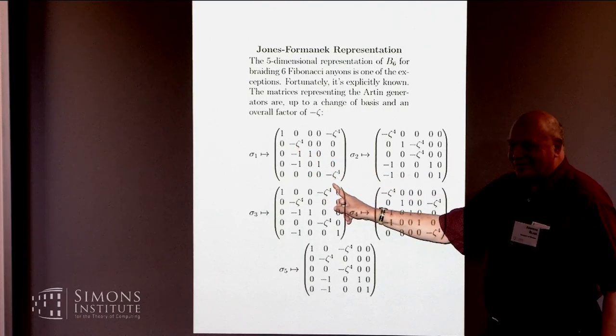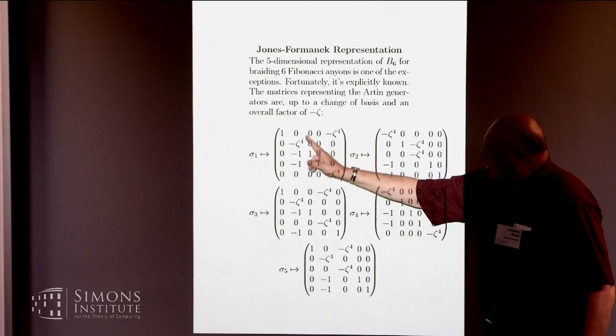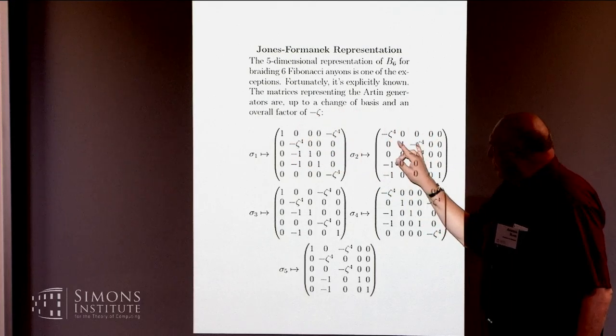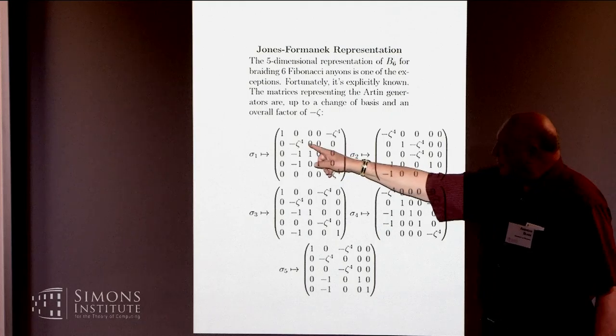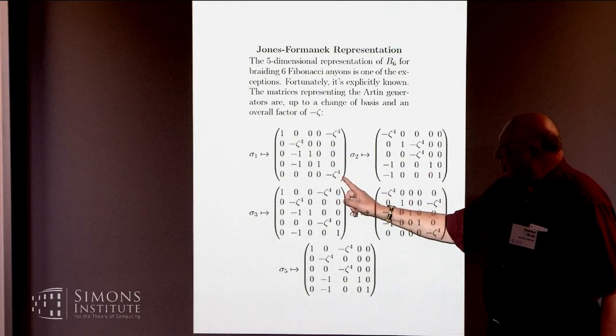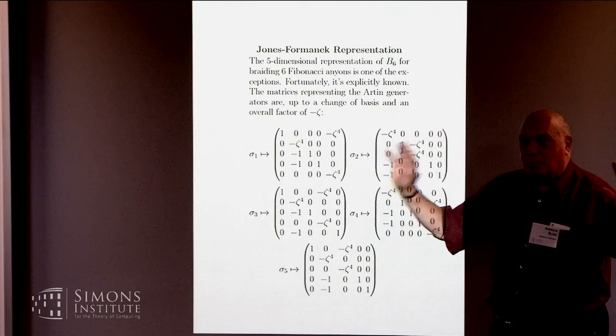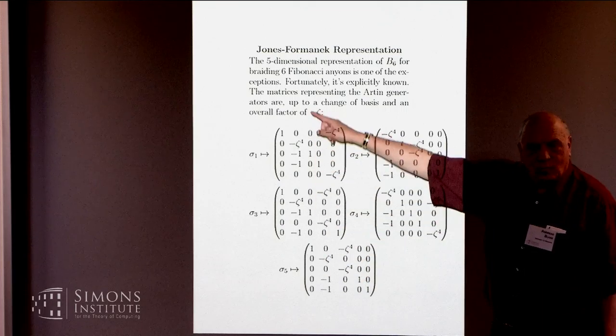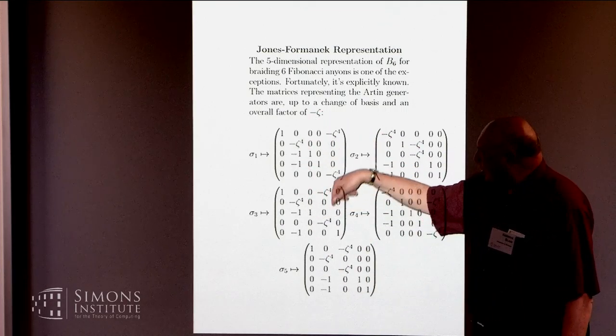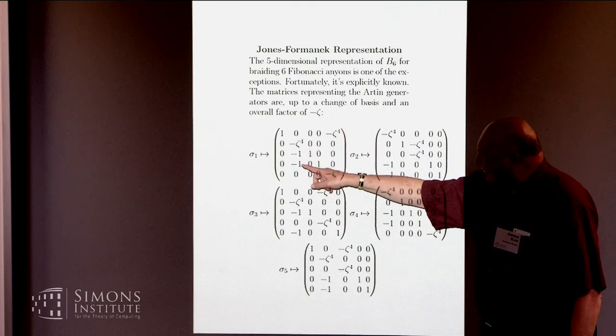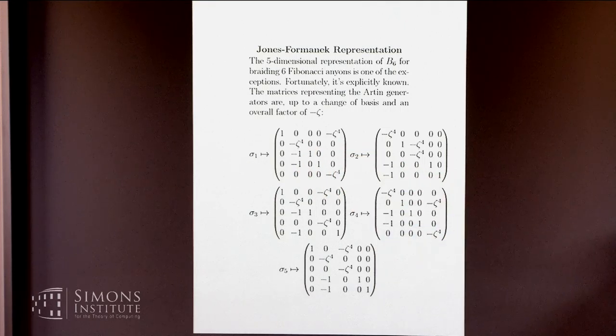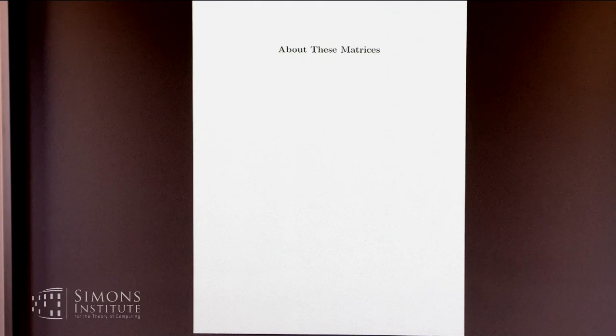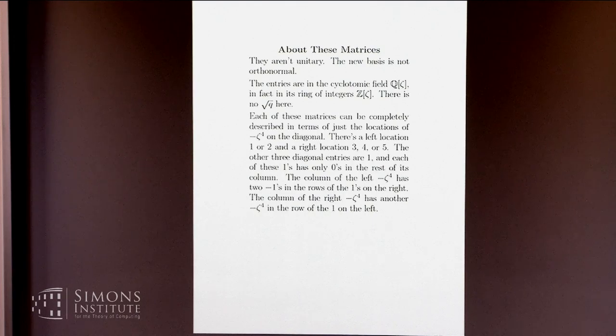But I will only point out that each of them has, on the diagonal, two occurrences of minus zeta to the fourth, one occurrences in the first two, one occurrences in the last three columns. And once you know where those two occurrences are, the rest of the matrix is completely determined. Ones on the rest of the diagonal, zeros above and below the ones,